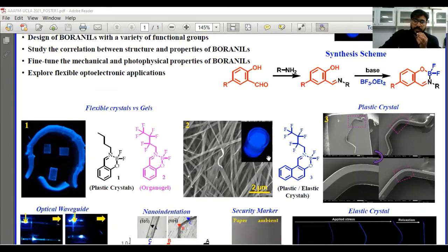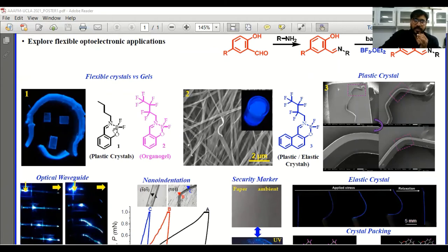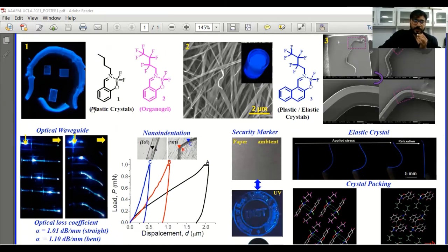In one project, I changed the side chain from butyl amine to heptafluorobutylamine. With the butyl amine we got flexible crystals, and with the fluoroalkyl chain we got an organo gel which is luminescent. These crystals are very nice long rod shapes and can deform because they are plastic in nature.